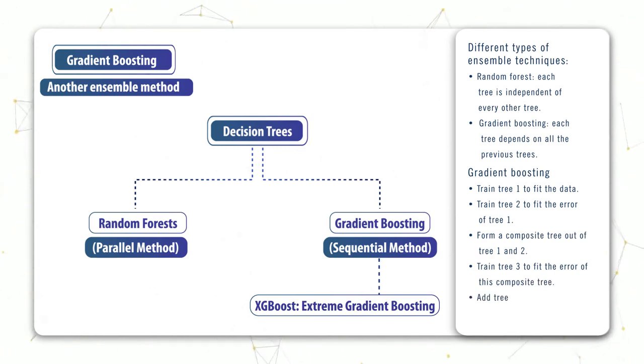And again we look at the new error produced by this new model and train another tree to fit this new error. We then add this back to the original model and so on and so forth. We keep iterating this until we're satisfied.